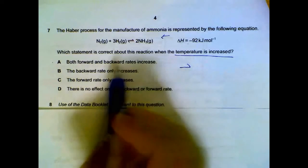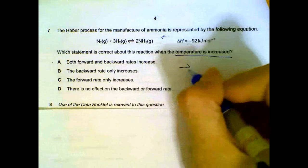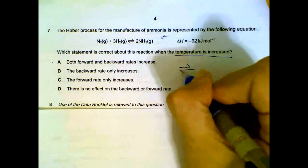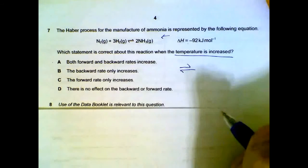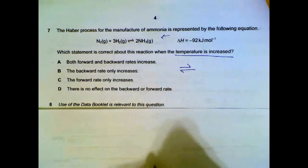So, what is actually happening is the forward reaction is increasing when temperature increases, but the backward rate of reaction increases even more. So that overall, we get the shift to the left side.